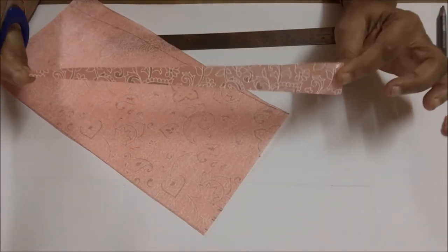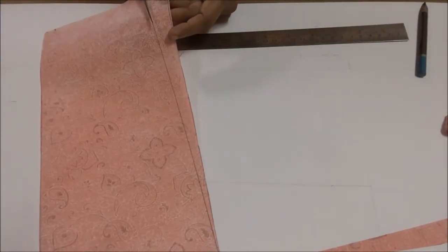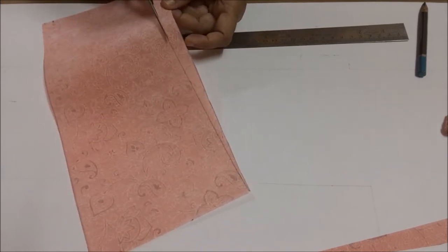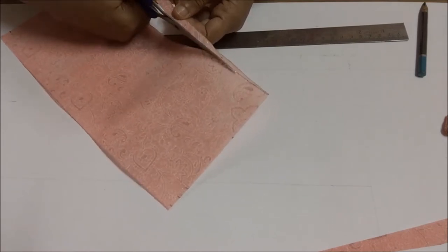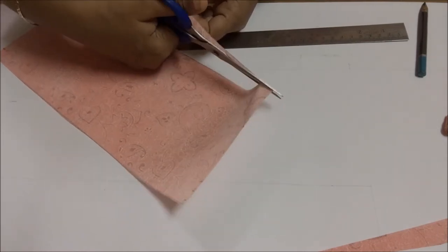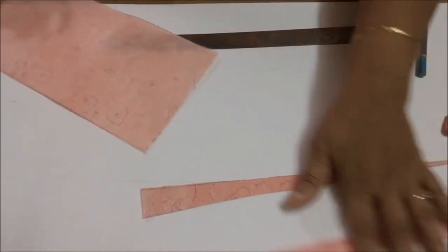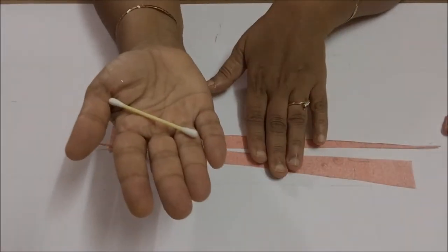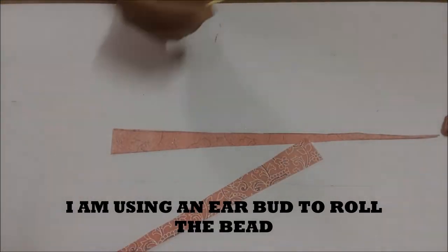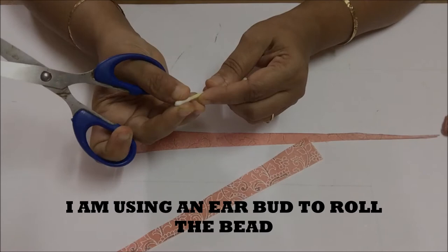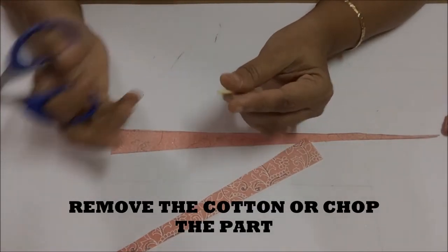This, we will make one bead, and this is the second bead. Okay, so let us start. I'm taking an earbud to roll the bead. So what we will do is, this cotton part, if you can remove it is fine, else just chop it off.